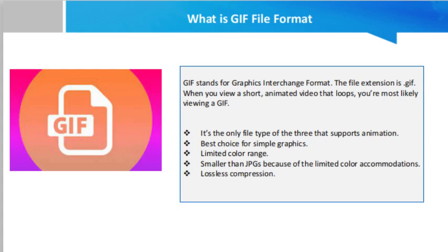GIF also has lossless compression. A GIF, or Graphics Interchange Format, is a type of highly compressed image originally owned by Unisys. GIF uses the LZW compression algorithm, which does not degrade image quality. For each image, GIF typically allows up to 8 bits per pixel and up to 256 colors across the image, in contrast to JPEG which can display up to 16 million colors.